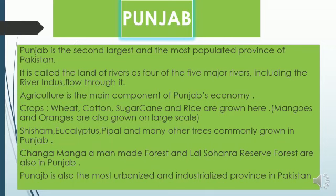Punjab is the second largest and most populated province of Pakistan. It is called the land of rivers, as four of the five major rivers, including the River Indus, flow through it. Agriculture is the main component of Punjab's economy, and crops like wheat, cotton, sugarcane, and rice are grown here.